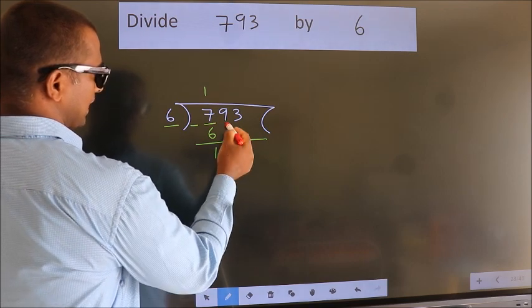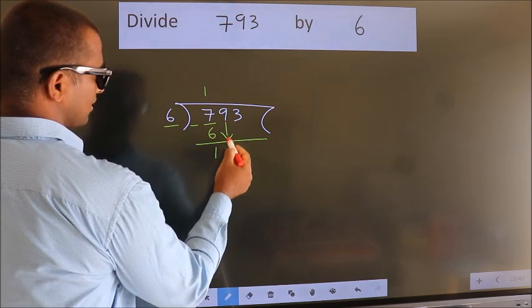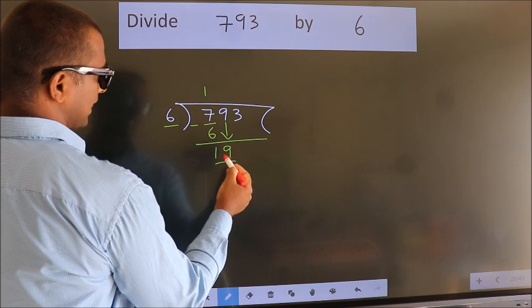After this, bring down the beside number. So, 9 down. So, 19.